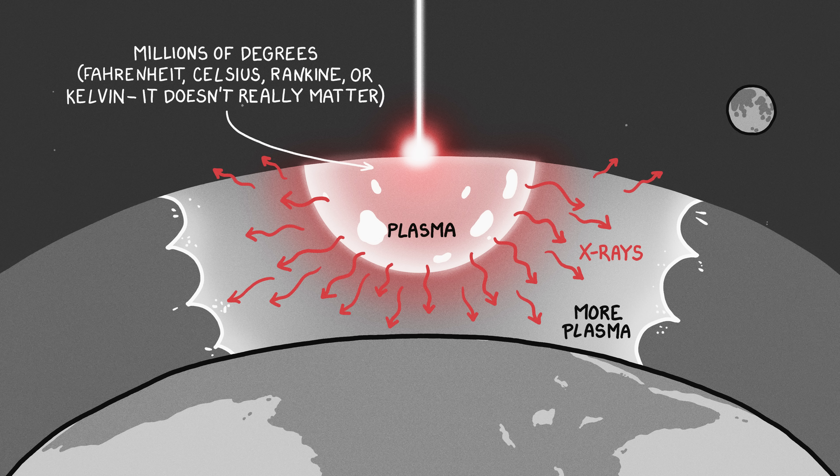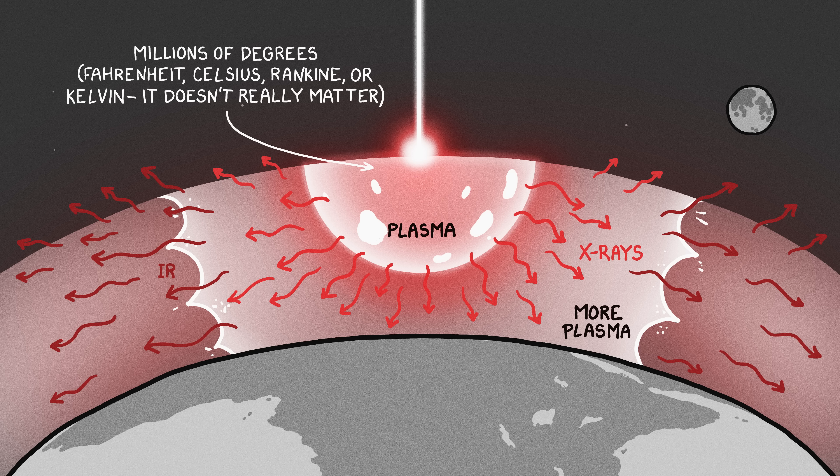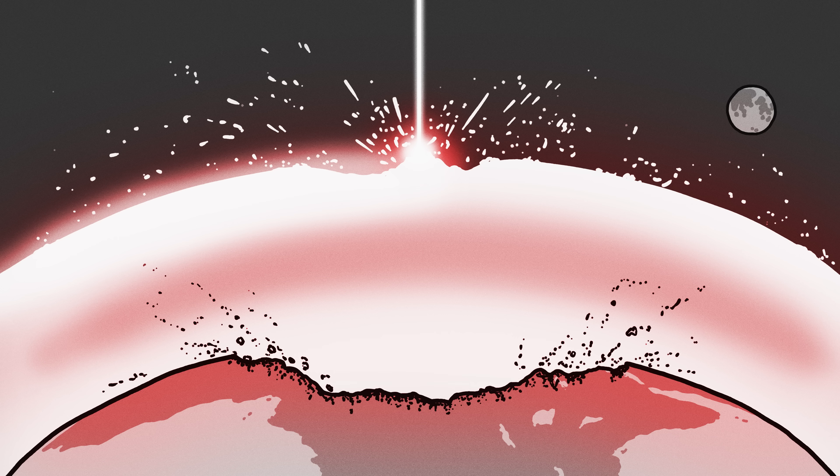Those X-rays would heat up the air around them, which would turn to plasma itself, albeit a cooler plasma, and start emitting infrared light. The radiation would vaporize everything in sight and start stripping away the Earth's surface, like a hydrogen bomb, only much more violent.